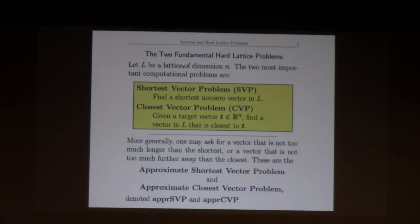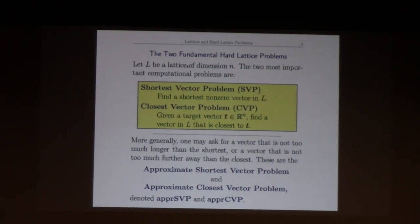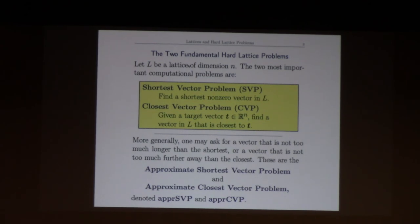More generally, since these problems tend to be very hard, we can ask: I'm not going to make you solve it exactly but just reasonably closely. For the shortest vector problem, maybe I won't ask you to find the shortest non-zero vector but something that's no more than 10 times longer than the shortest vector, or 100 times longer or whatever. Similarly, you don't have to find the closest vector lattice point to the target but just something that's no more than 10 or 20 or 100 or a thousand times further away.